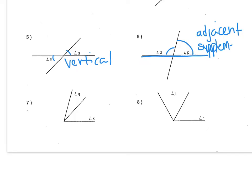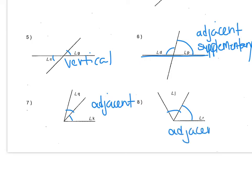Angle D and angle P add up to 180 degrees. Number 7, angle Q and angle K are adjacent angles because they're right next to each other, but they don't make a straight line and they don't make a 90 degree angle, so they're just adjacent. And number 8, angle J and angle R are also adjacent because they're right next to each other, but they don't make a straight line or a 90 degree angle, so they are not complementary or supplementary.